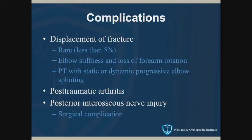For surgical treatment, the main concern is posterior interosseous nerve injury because of the way it winds around the radial neck — it's right in the surgical approach.